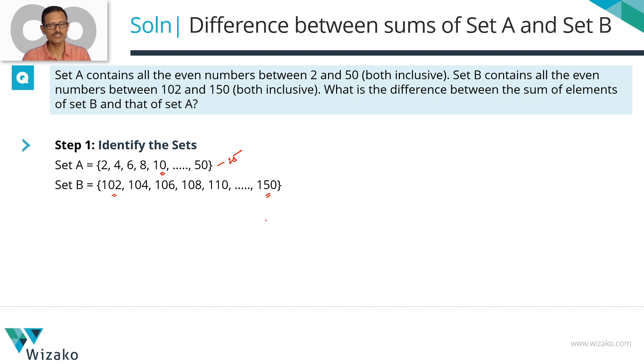So set B, because it's going to start with 102, it's displaced by 100 actually and goes all the way up to 150. So set B will also have 25 elements. Set A has 25 elements, set B has 25 elements.